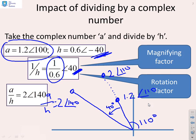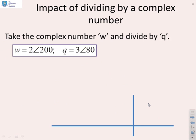Here's a different example then. Find the impact of division. We've got a complex number w, and I want to divide by q. So w equals 2, and the argument is 200. Let's first of all write that one down. That's going to be over here, somewhere like that. So there's w equals 2 arg 200.